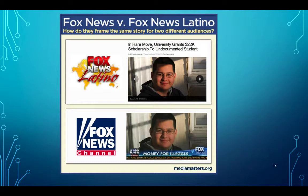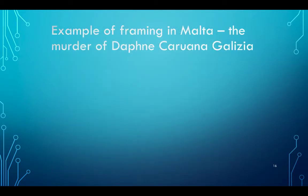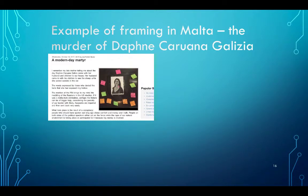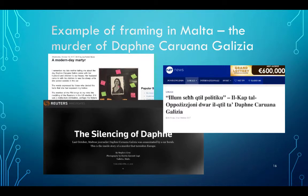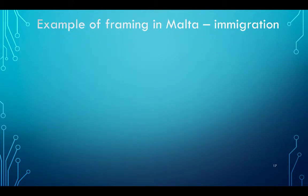Framing examples from Malta include coverage of the murder of Daphne Caruana Galizia. She was labeled as a modern-day martyr from one perspective; from a political point of view the murder was described as a political murder; and internationally, a Reuters screenshot emphasized the silencing of an investigative journalist. The same event was framed and reported in slightly different manners.